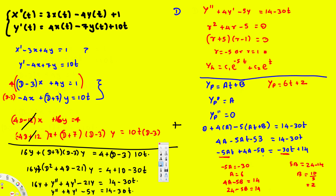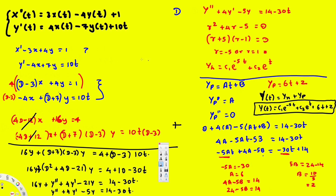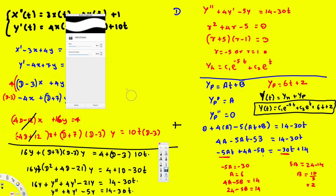Now we have the particular solution yp equals 6t plus 2. Combining with the homogeneous solution using superposition, the general solution for y is y of t equals c1 e to the negative 5t plus c2 e to the t plus 6t plus 2. That's one of the two solutions — we also need to solve for x of t.